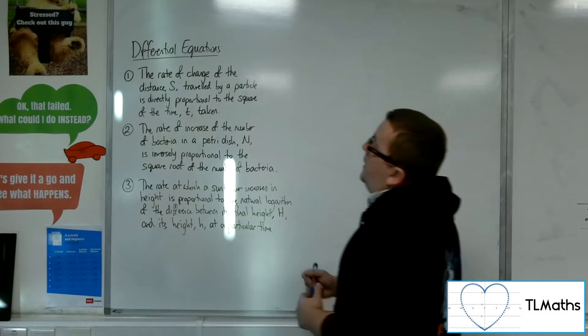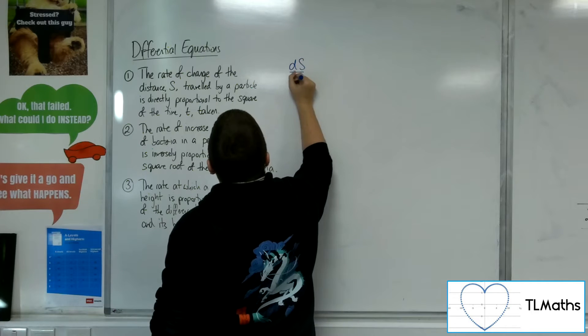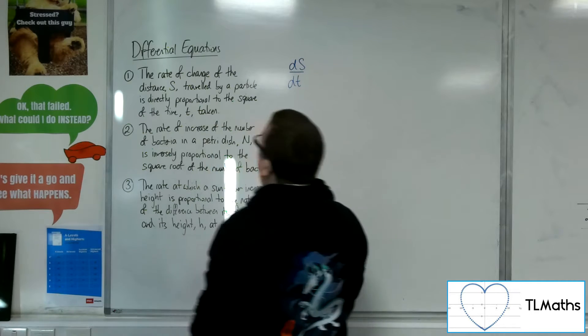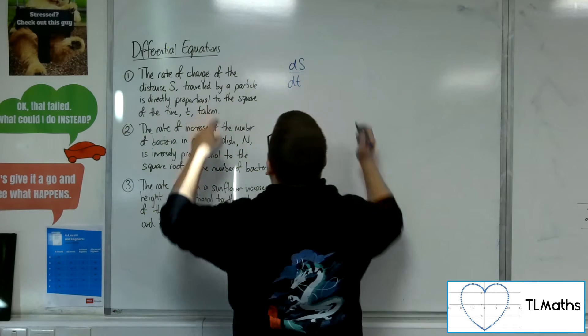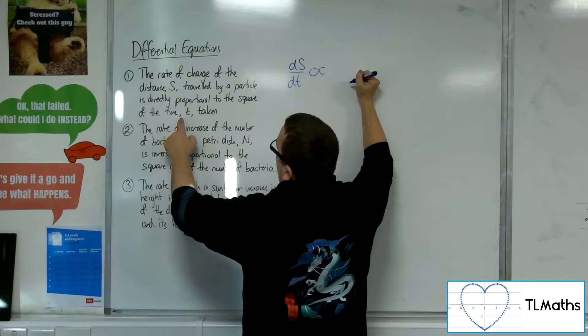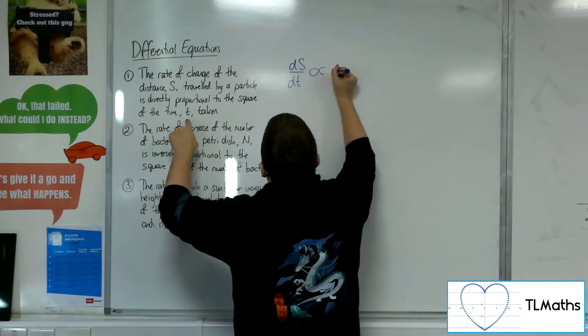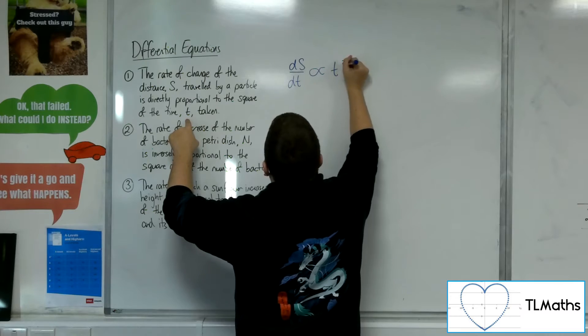So the rate of change of the distance with respect to time, so ds by dt, and we're saying it's directly proportional to the square of the time t. So in other words, it's proportional to t squared.